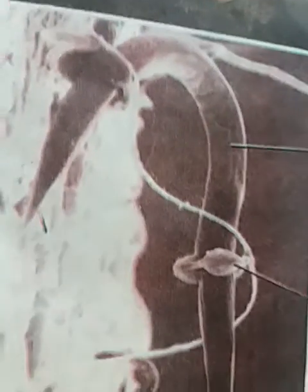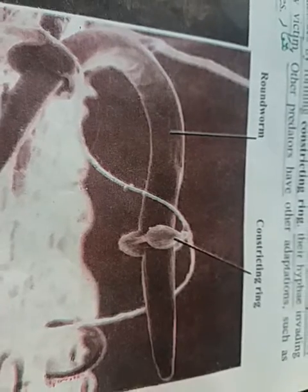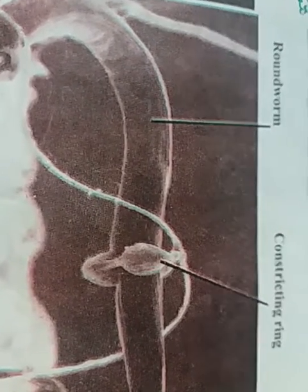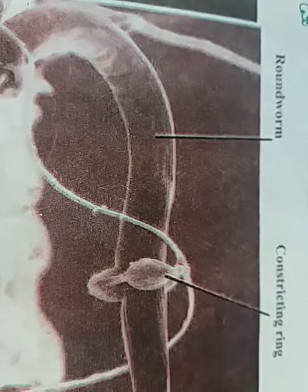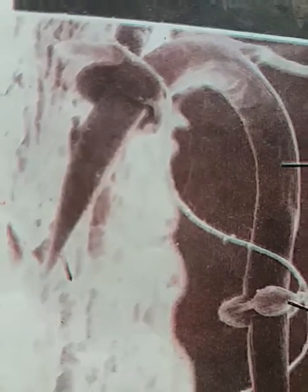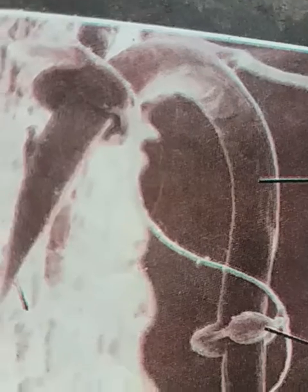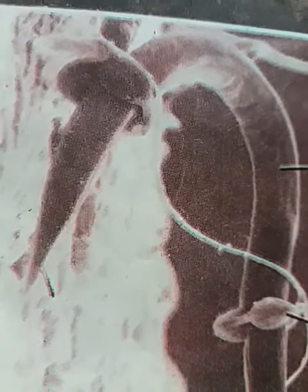Other predators have adaptations such as secretion of sticky substances۔ کچھ فنجائی nematodes کو شکار کر لیتی ہے — جیسے یہ ڈائیگرام میں دکھایا گیا ہے کہ فنگس نے white threads کے ذریعے nematode کو constricting ring میں جکڑا ہوا ہے۔ Fungus نے اسے trap کر لیا اور تمام nutritional contents absorb کر دے گی۔ Worm آہستہ آہستہ weak ہوتا چلا جائے گا اور تمام body nutrients absorb ہونے کے نتیجے میں اس کی death ہو جائے گی۔